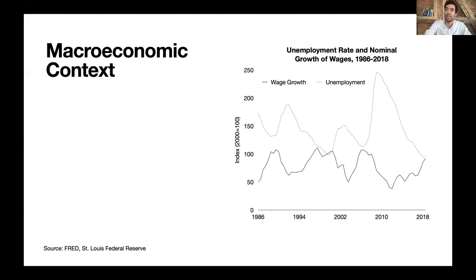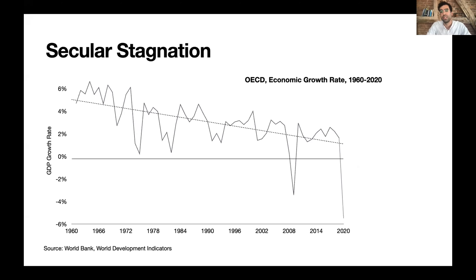But what you don't see in such a graph is the pattern over the course of business cycles — a phenomenon called secular stagnation. Over many business cycles since the 1960s, the average growth rate across the OECD as a whole has fallen from about 5% per year to a little more than 1.5% per year.